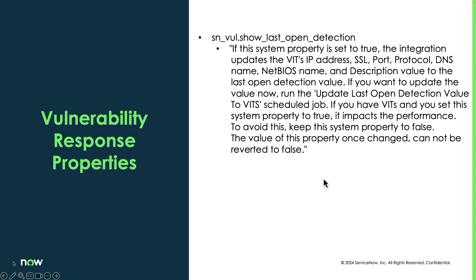The next one is show the last open detection. This is going to essentially roll up detections — so if you have three detections normally associated to a VIT, this would allow it to just show one and all that information would roll up. This scheduled job would run accordingly. It is advised to keep it false, because once you enable that roll-up, you can't undo it. There is a good article out there about this.